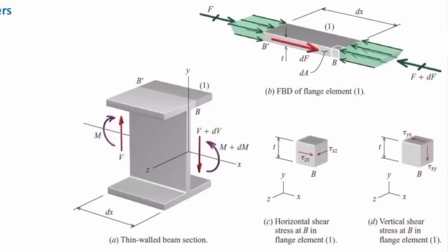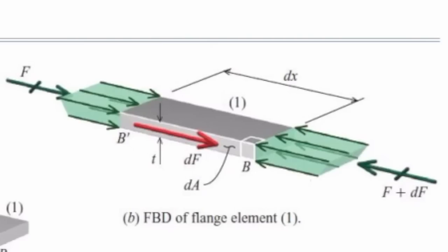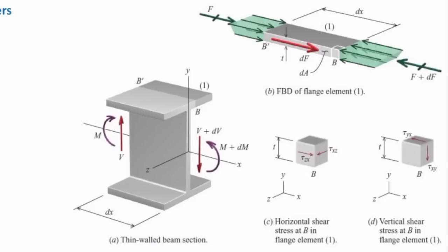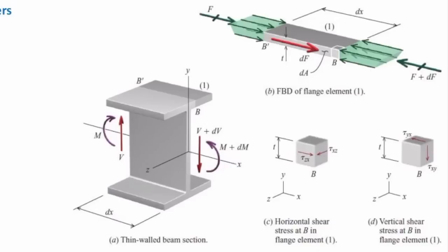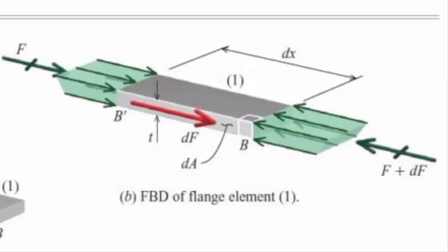Why do we cut in the vertical direction for this case? Look at this figure. Try to remember the concepts used for developing the VQ over IT equation. We determined the unbalanced force, which came from the normal stress on the right and normal stress on the left. That unbalanced force was acting on the cut section where the element is connected to the rest. For point B, to separate it from the rest of the element, we need to cut in the vertical direction — and that is our cut section. That delta F, the unbalanced force, acts on this side.